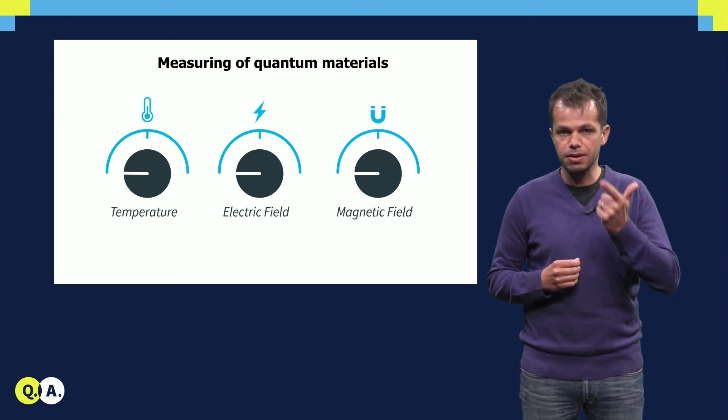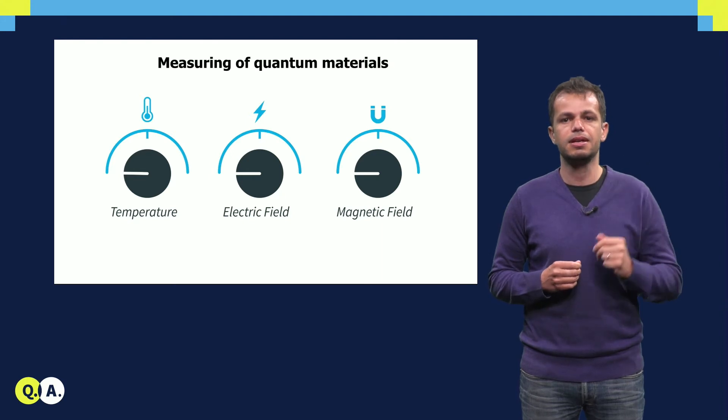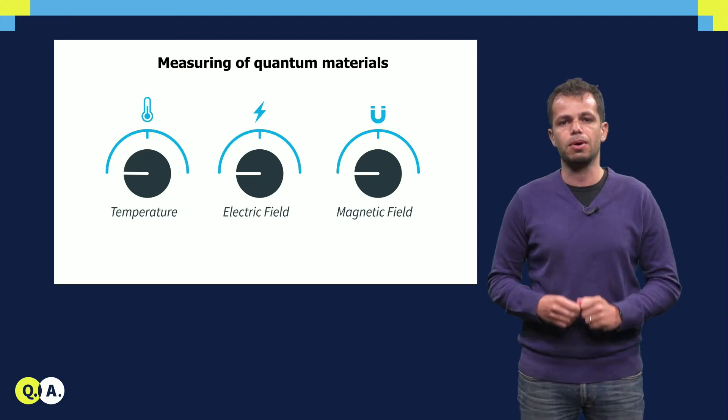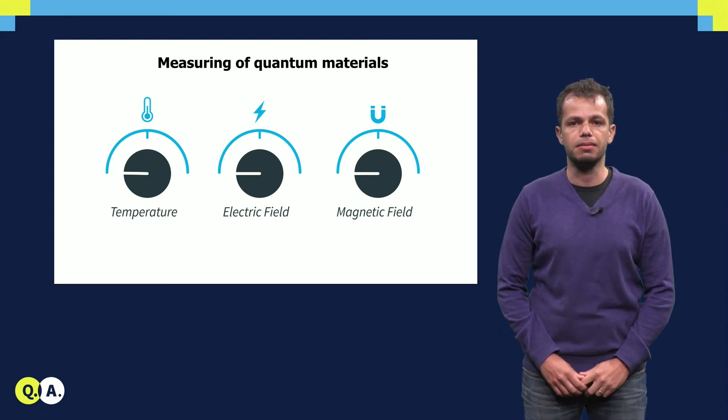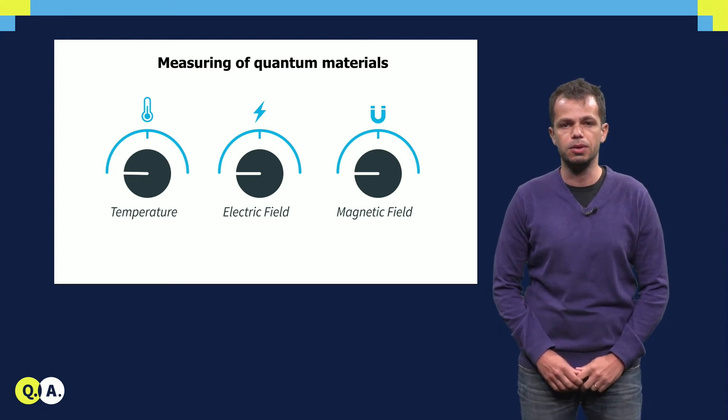Temperature, electric fields, magnetic fields are the few knobs that we turn in our labs to probe quantum materials. These studies provide useful feedback to make the material a better environment for the qubits.